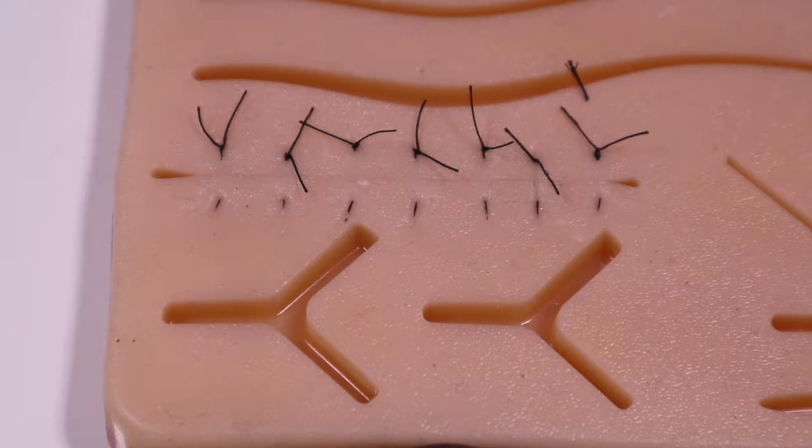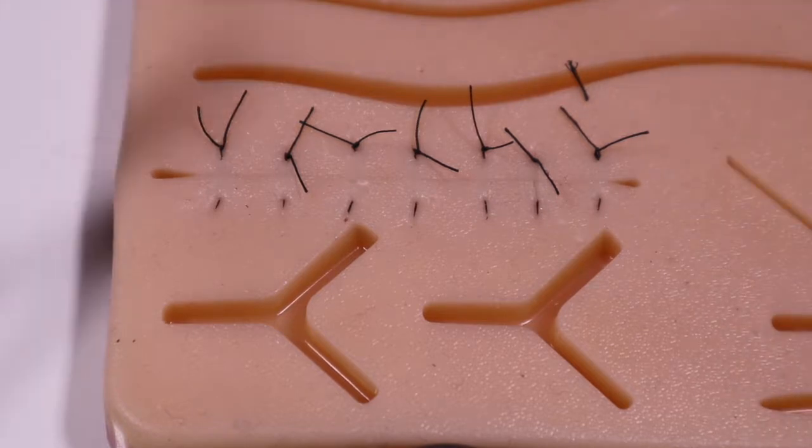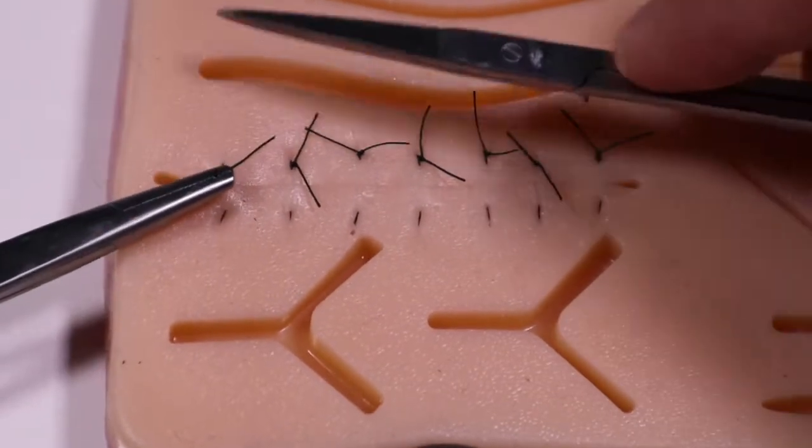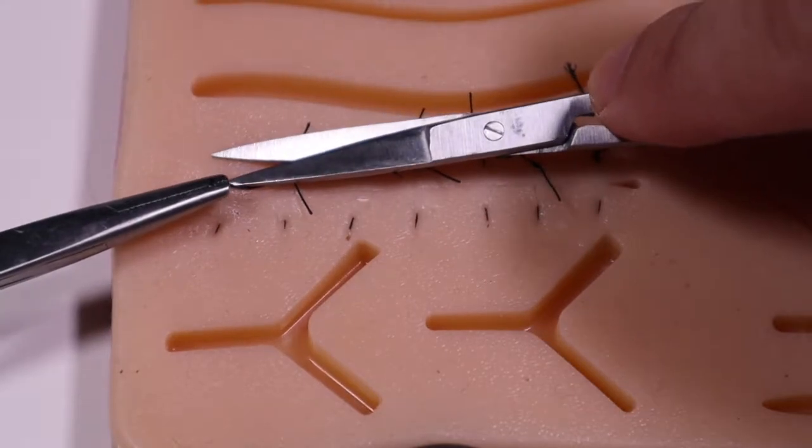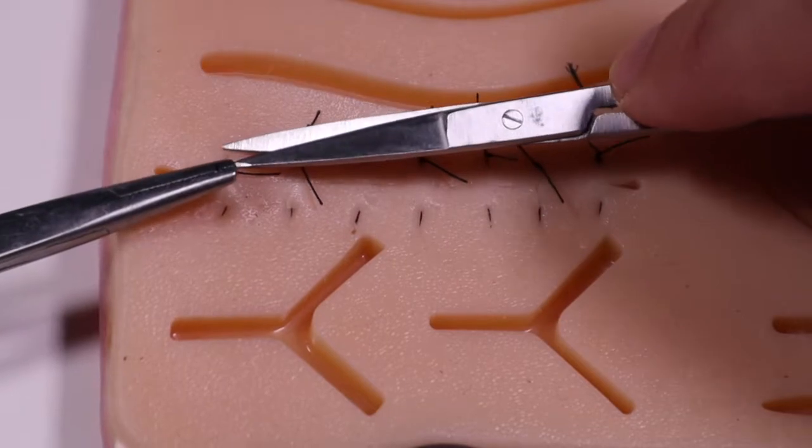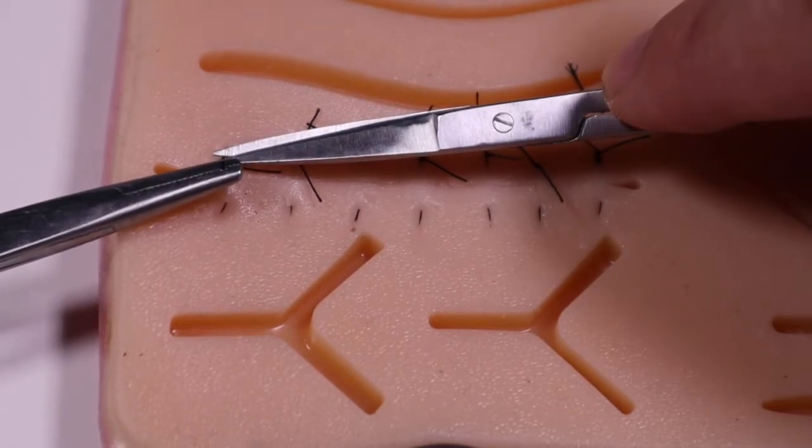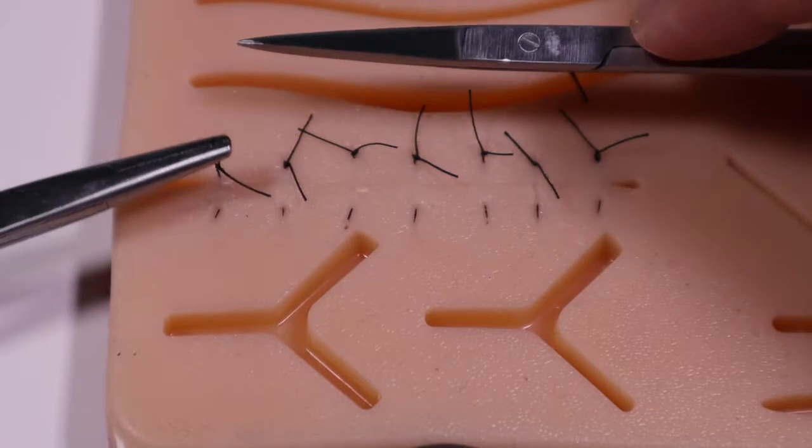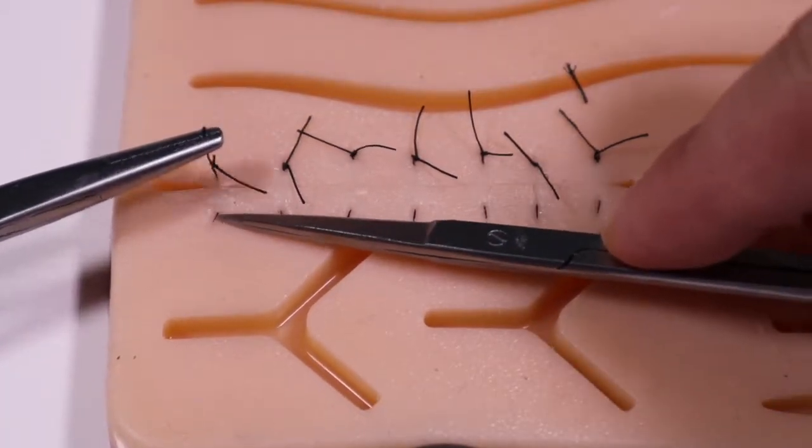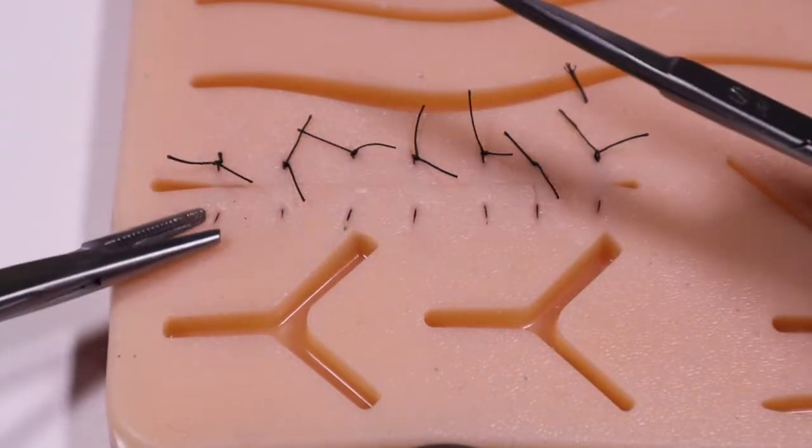So now how do we properly remove the vertical mattress suture? Again, we want to follow the same principles of every other suture removal in that we don't drag any exposed suture through the skin wound. So we will cut our far suture right at the skin.